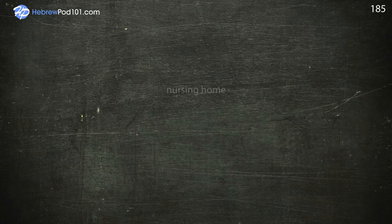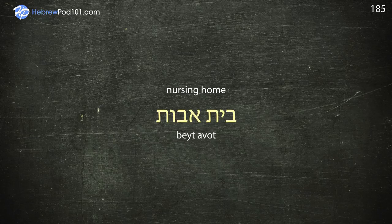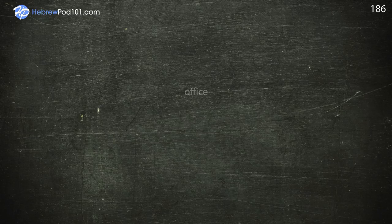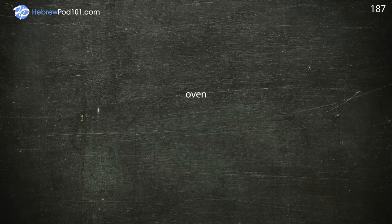Nursing home — Bet-Avot. Office — Misrad. Oven — Tanur.